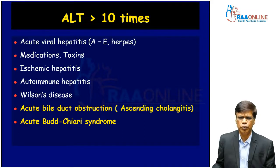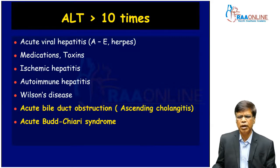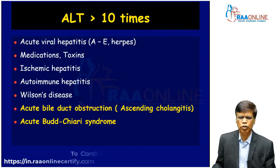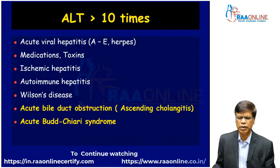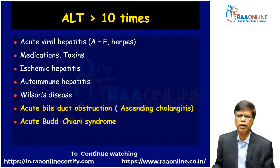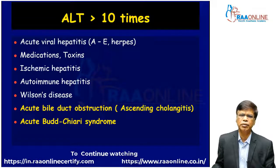In summary: acute viral hepatitis, toxic hepatitis, ischaemic hepatitis, acute flare presentations of chronic hepatitis such as autoimmune hepatitis and Wilson's disease, and — atypically — acute bile duct obstruction and Budd-Chiari syndrome can all present with a predominantly hepatocellular enzyme pattern.